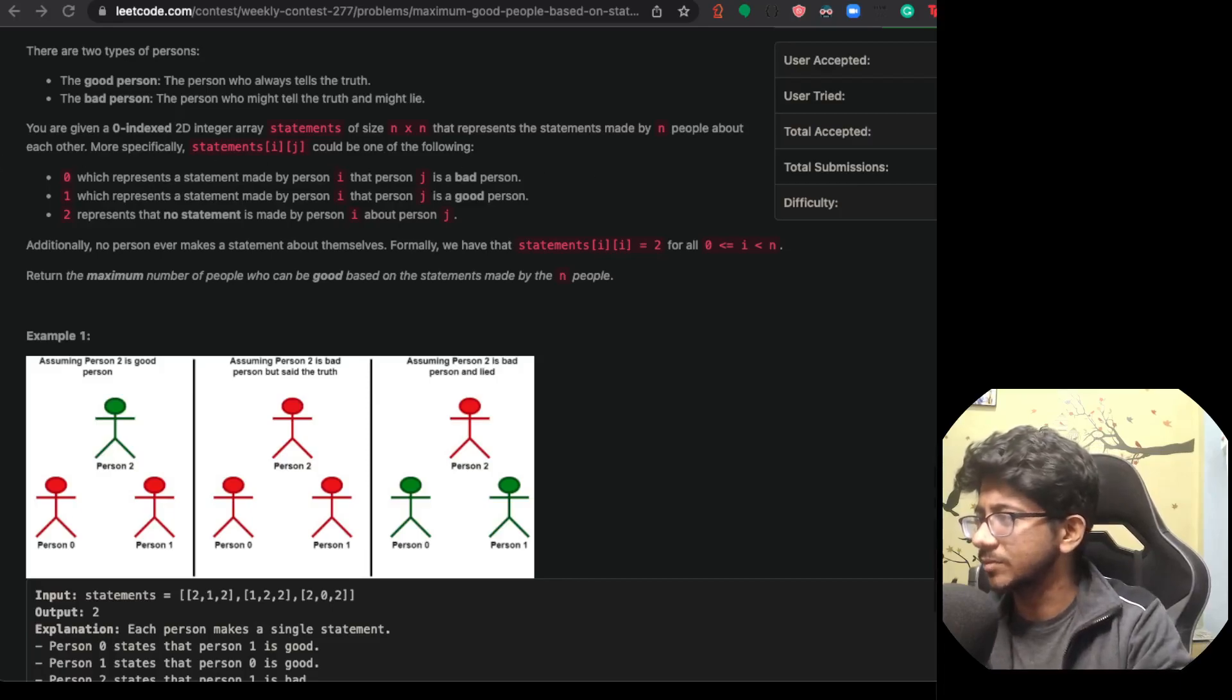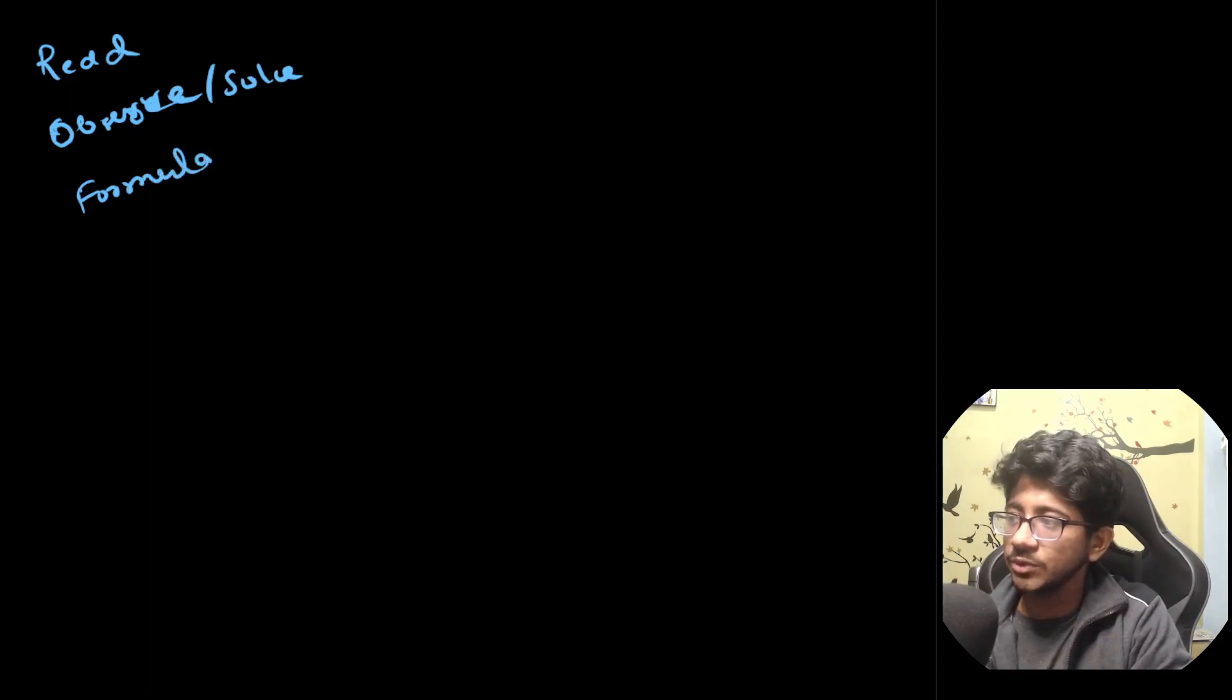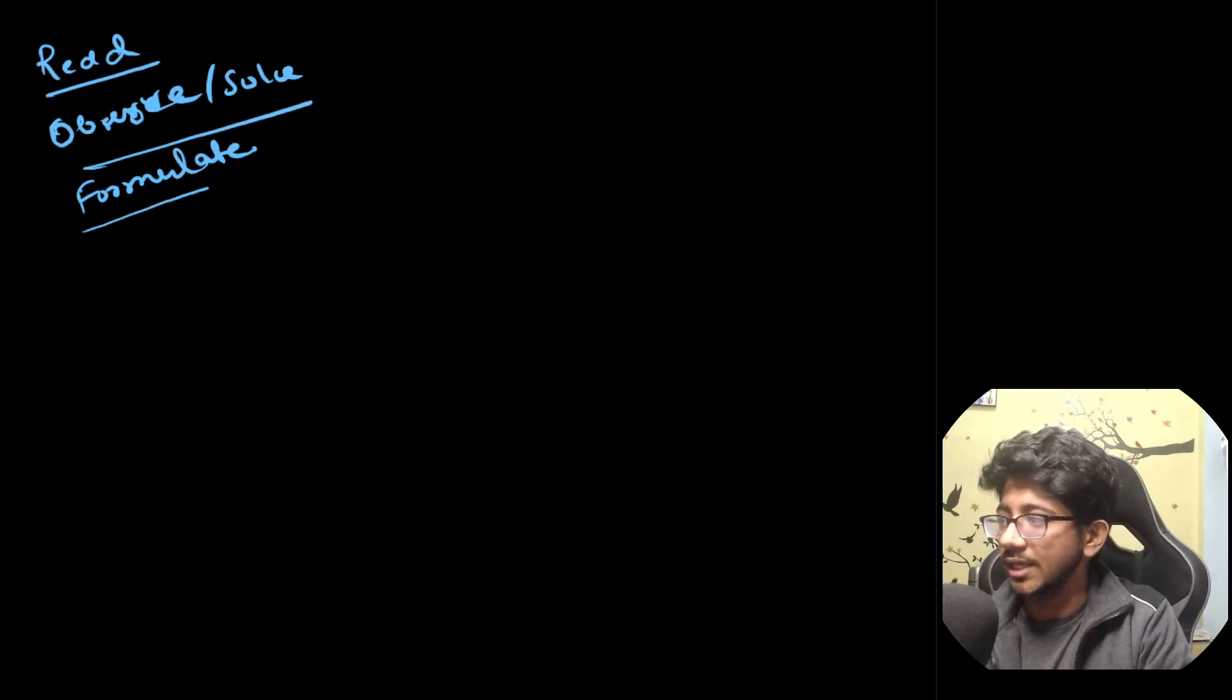So let's move into the observation phase. So we have this reading done. Now we understand what the problem is and let's try to go ahead and move to the next state. So we have read, observe, or maybe solve the problem. Then we go into formulate, and how we will do this in code, some high level views. And then coding and debugging is something that we don't take in this series. So read, observe, and then formulate. Let's move into observing.